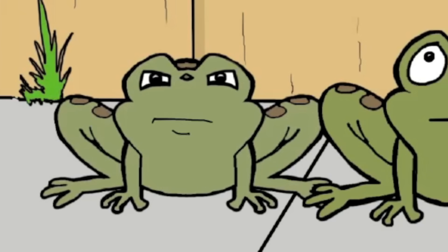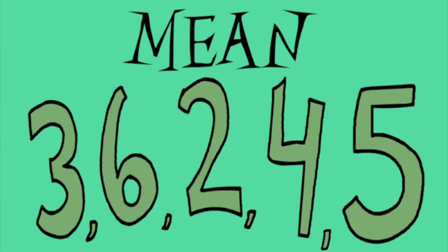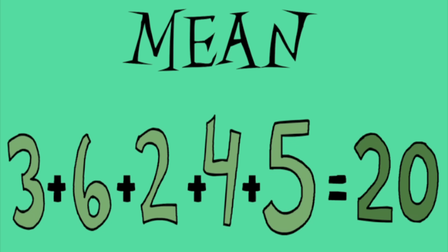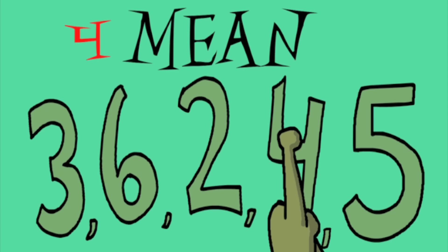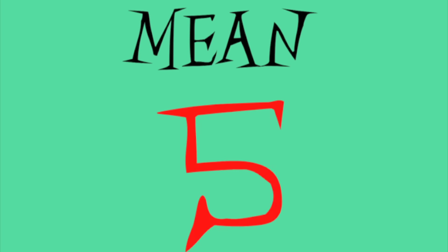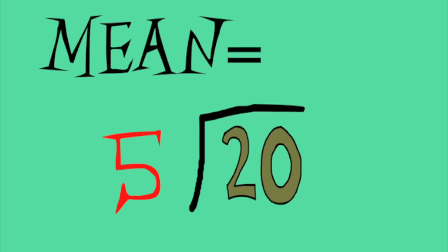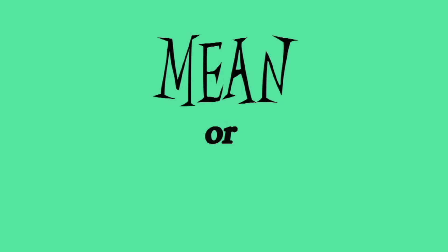I'm the mean toad. To get mean, like me, take a set of numbers or data and add them up. Then you count how many numbers you got. After that, you divide the sum of the numbers by how many there are.